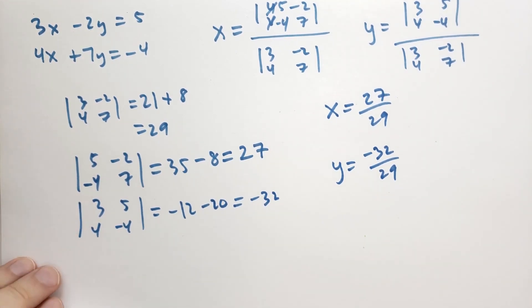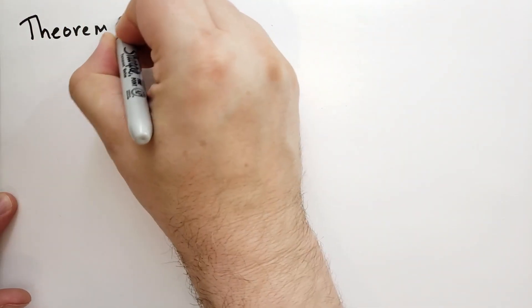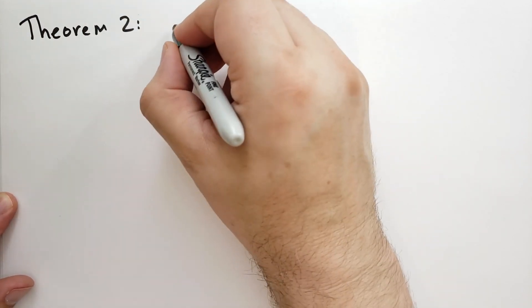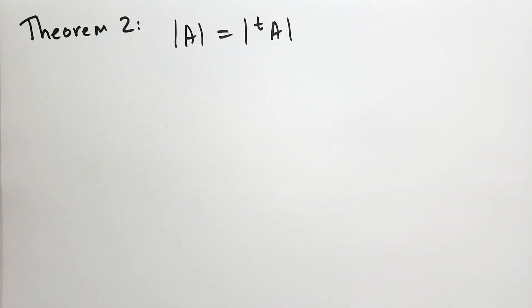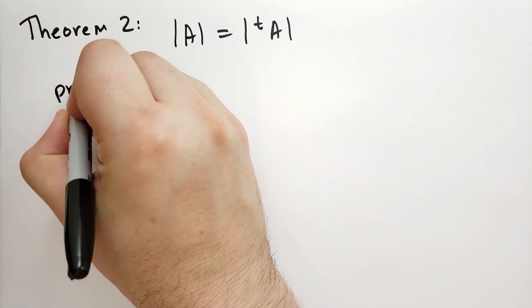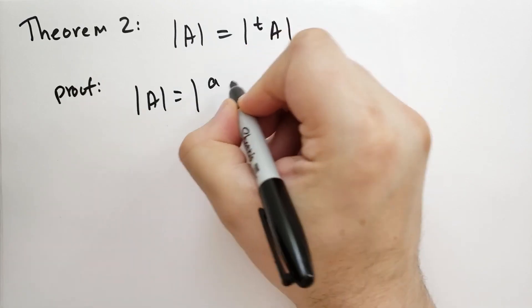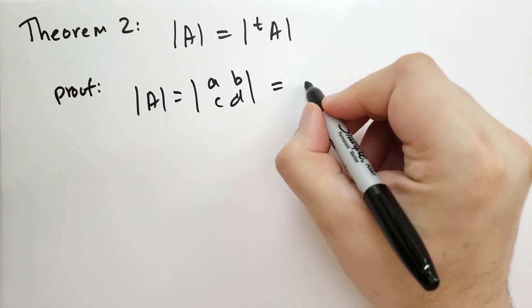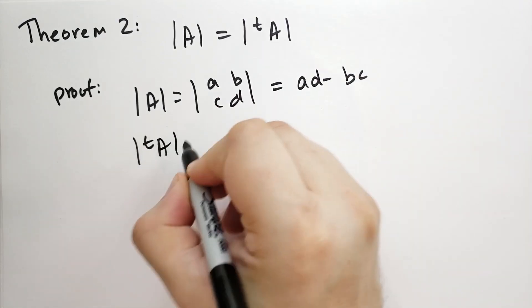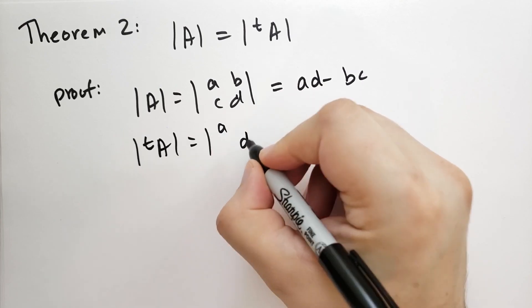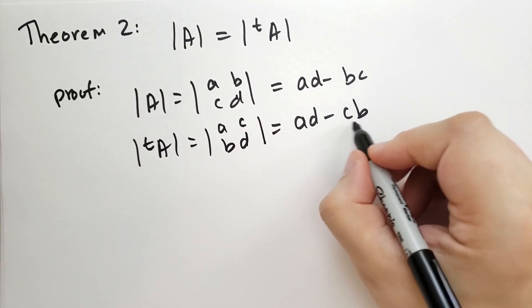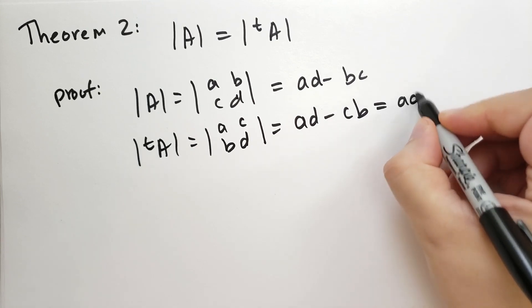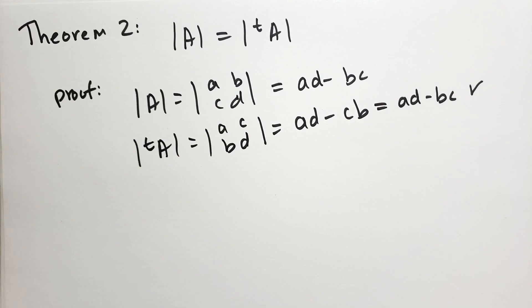Theorem 2 states that the determinant of A equals the determinant of the transpose of A — taking the transpose doesn't change the determinant. The proof is straightforward: the determinant of A is AD minus BC. The transpose of A has C and B flipped, so its determinant is AD minus CB. By commutativity of multiplication, AD minus CB equals AD minus BC. So the two determinants are indeed the same.